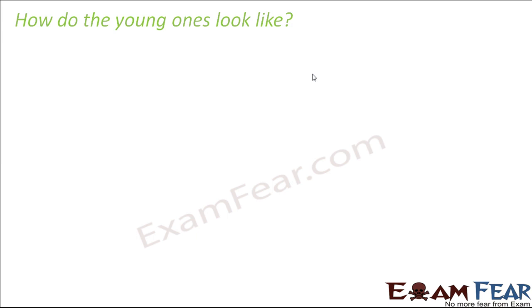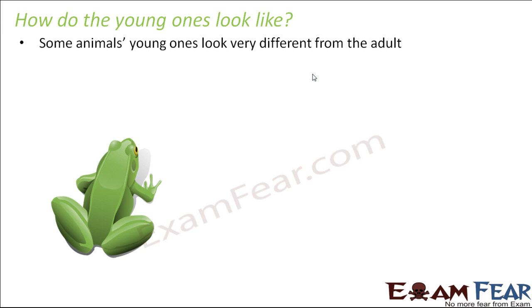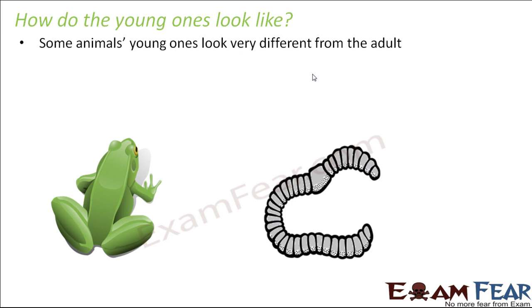Now our question is: do all young ones of different organisms look exactly similar to their parents? In human beings, the babies look like human beings. But for all animals, young ones do not necessarily look similar to their parents. For example, a frog — some animals' young ones look very different from the adult. If you look at their life cycle, the animal looks completely different at various stages. We will also talk about the silkworm: it is a worm, but in its adult stage you see it as a moth, and both of them look so different — yet it is the same organism.